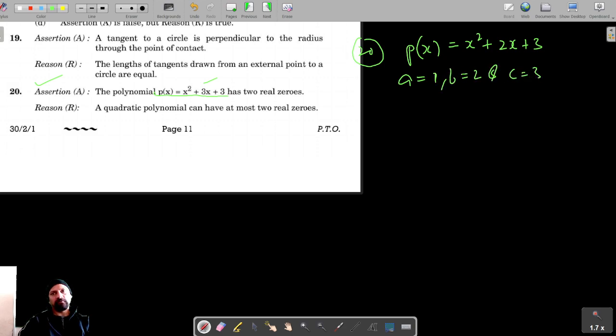Let's find out D, which equals b squared minus 4ac. So this is 2 squared minus 4 times 1 times 3, which is 4 minus 12.